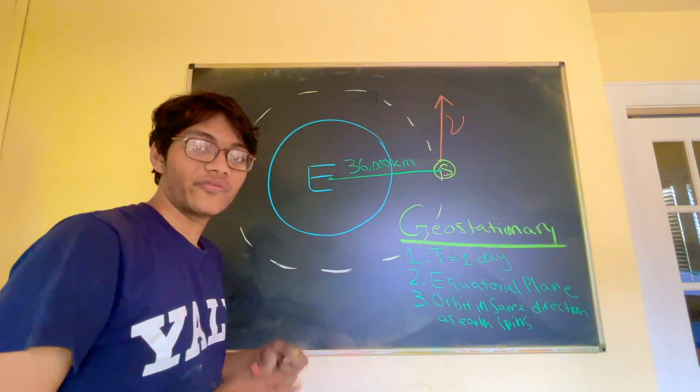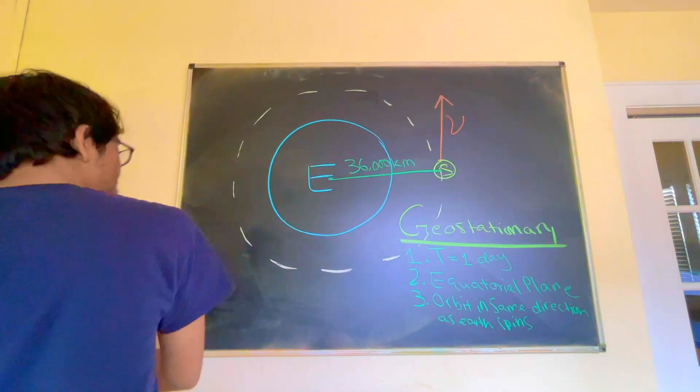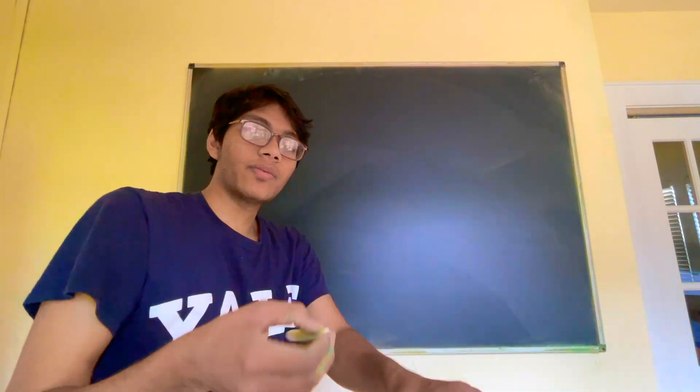Now, if you want to escape the Earth, all you have to do is make a boost tangentially. Sir Isaac Newton told us that a long time ago. So that's a classic way to escape the Earth from a circular orbit. What's a different way?